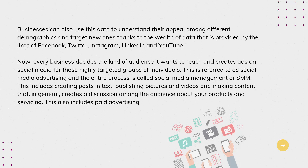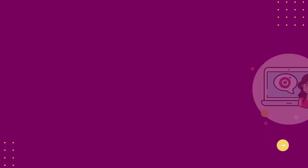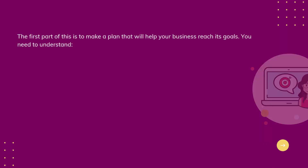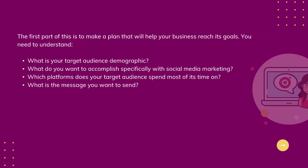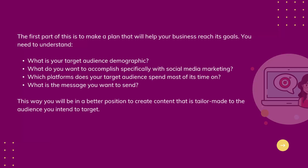The first part of this is to make a plan that will help your business reach its goals. You need to understand: what is your target audience demographic? What do you want to accomplish specifically with social media marketing? Which platforms does your target audience spend most of its time on? What is the message you want to send? This way, you will be in a better position to create content that is tailor-made to the audience you intend to target.